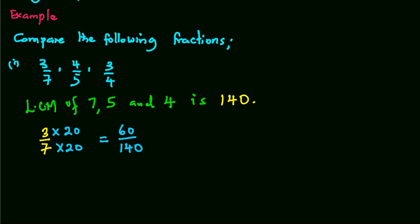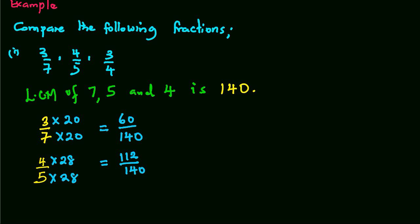The next one is 4 over 5 times 28 times 28, which gives 112 over 140. And finally, we have 3 over 4 times 35 times 35, which gives us 105 over 140.